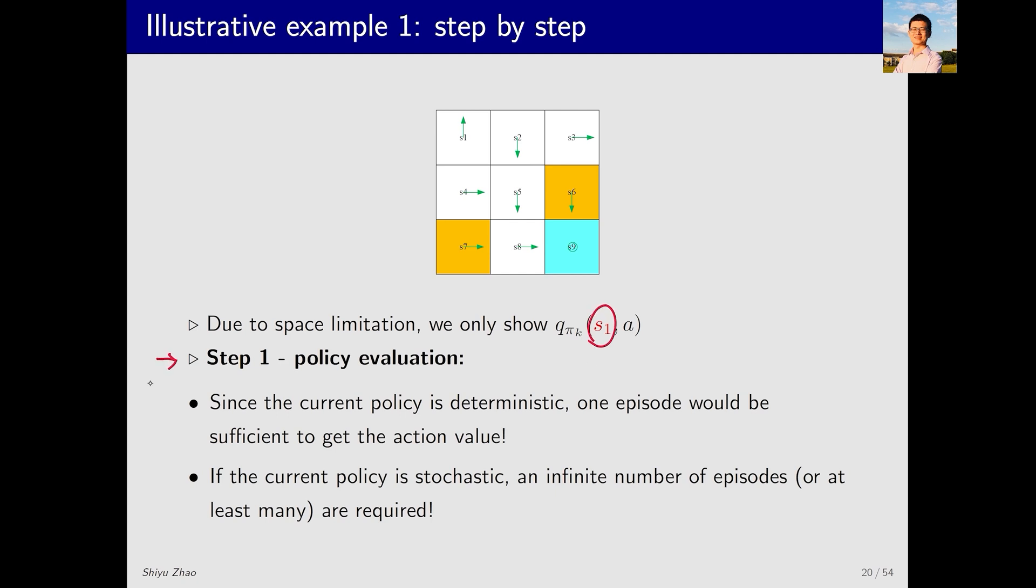First we perform policy evaluation. As we mentioned earlier, starting from S1A1, we need to find n trajectories, and then we calculate the average return of these n trajectories. Then I can use the average to approximate Qπk(S1,A1).